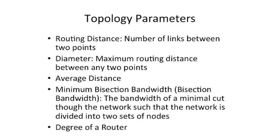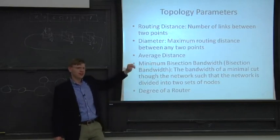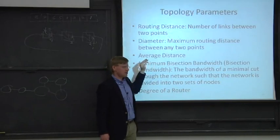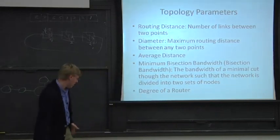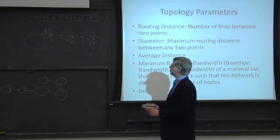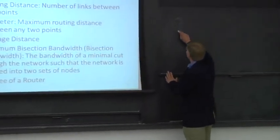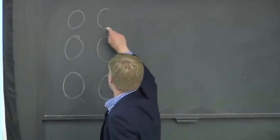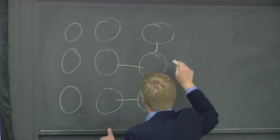Bisection bandwidth, or what sometimes people call minimum bisection bandwidth, is an interesting concept. By definition it's minimum, so usually people drop this word. But I wanted to put it up here to tell you guys that you can't take any cut through a network. You have to take the minimal cut through the network. So what I mean by that is, let's take a four-ary two-cube.